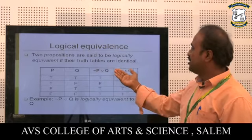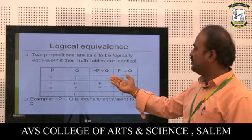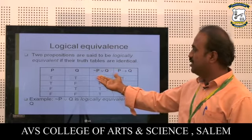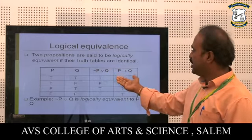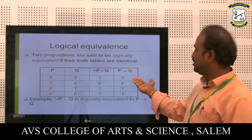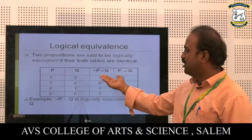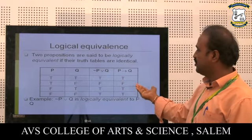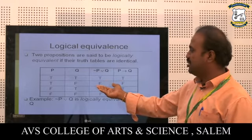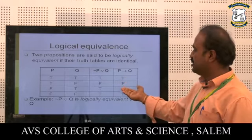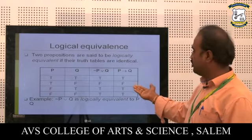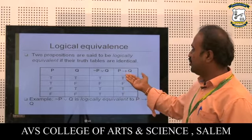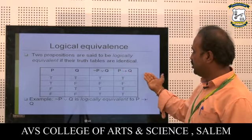Logical equivalence: Two propositions are said to be logically equivalent if their truth tables are identical. For example, comparing not-P or Q with P → Q: True/True gives True for both. True/False gives False for both. False/True gives True for both. False/False gives True for both. Therefore, not-P or Q is logically equivalent to P → Q.